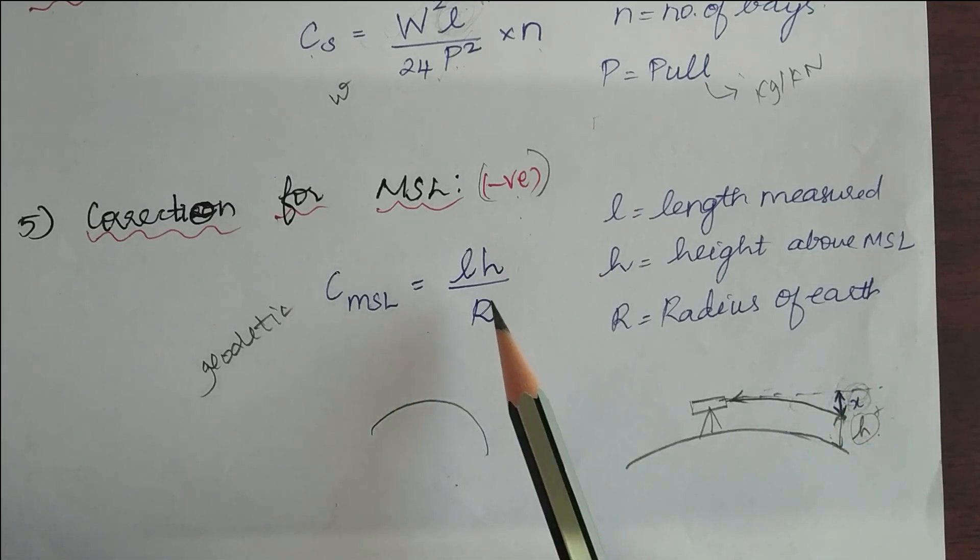So in order to find the value of x, we have a formula here. This LH by R, where L is the length measured, the curve length measured, and h is the height, and R is the radius of the earth.